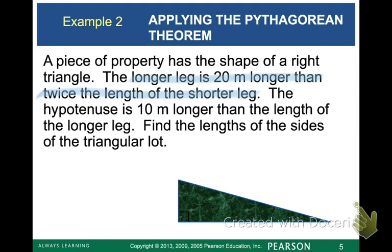Let's first look at this sentence. It says the longer leg, so that's the one along the bottom of your screen, is 20 meters longer than twice the length of the shorter leg. So we're going to go ahead and call our short leg x. Now we need to write an expression for 20 longer than twice x. That's going to look like 2x plus 20.